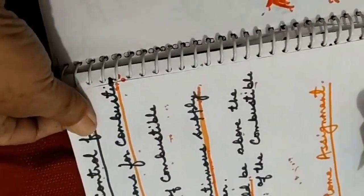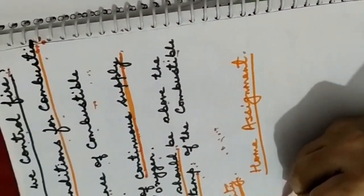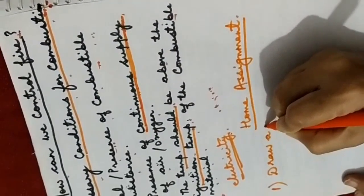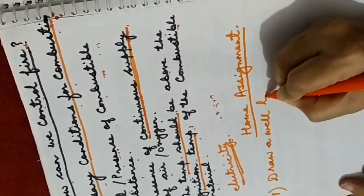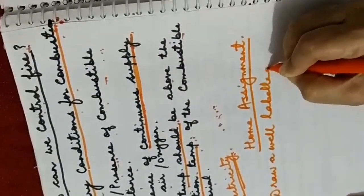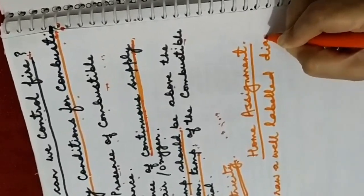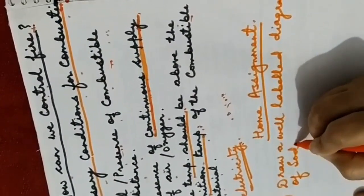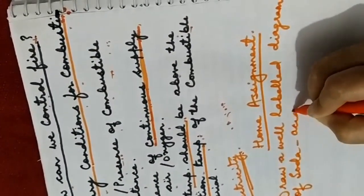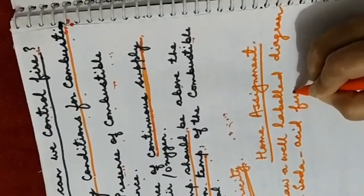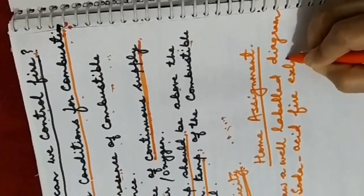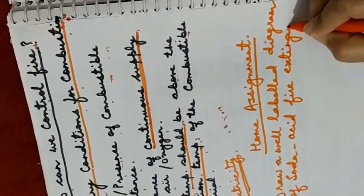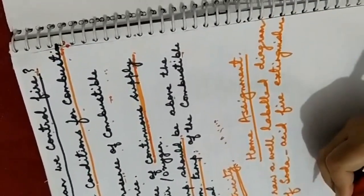Now for the home assignment: the first one is to draw a well-labeled diagram of the soda acid fire extinguisher. The second one is that the chapter is completed, so write the keywords of chapter number 7.